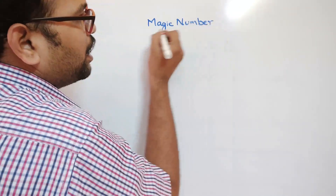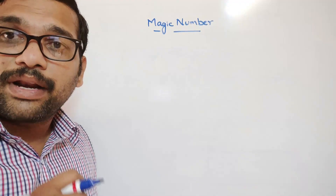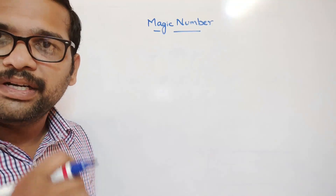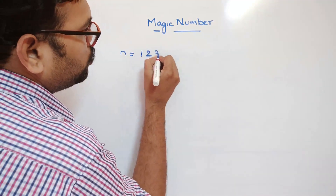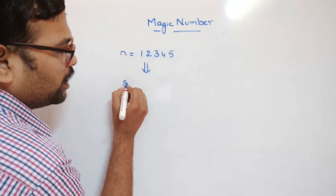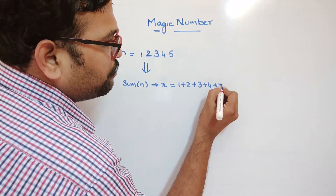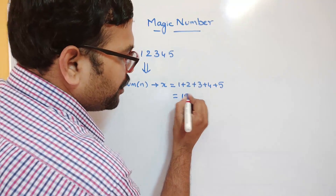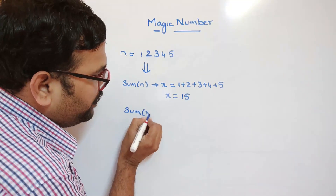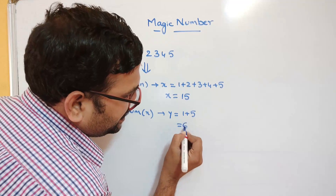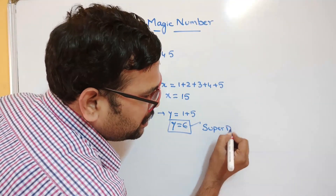What is a magic number and how can we find it? In the previous session we saw the program for super digit — that means recursively finding the sum of all individual digits until you get a single digit. For example, if the number is 12345, then sum = 1+2+3+4+5 = 15. Since 15 is not a single digit, we apply the sum again: 1+5 = 6. So 6 is the super digit.